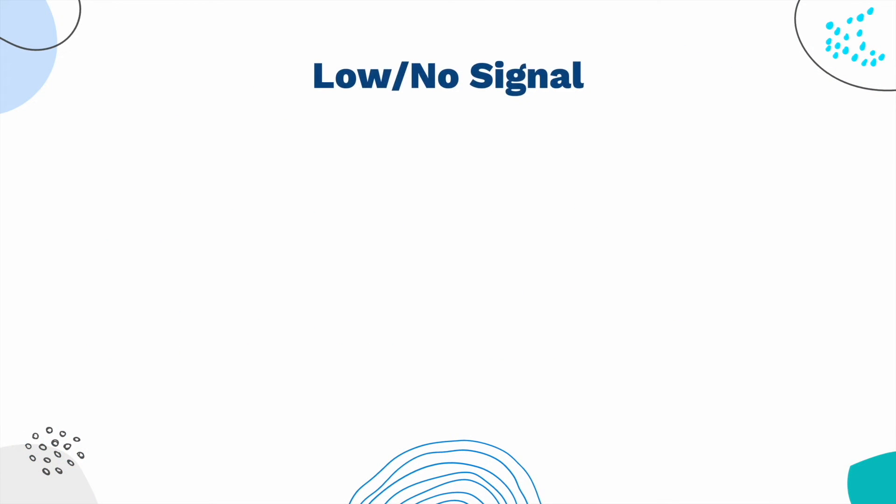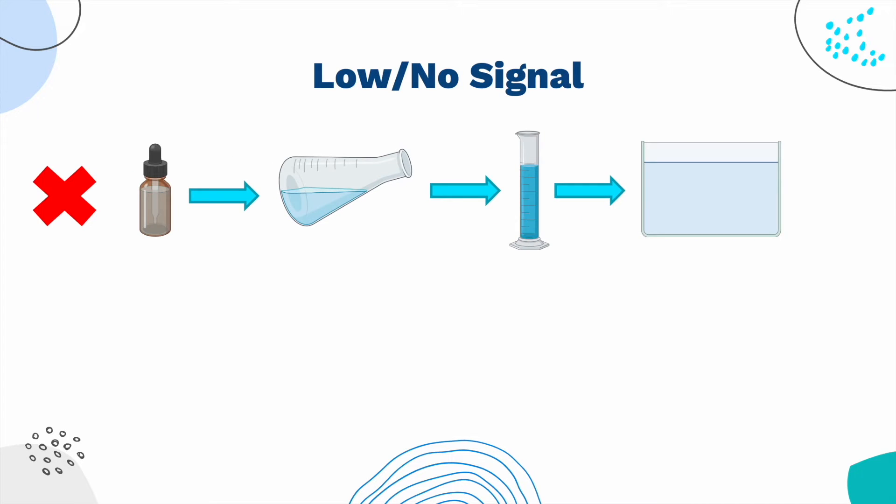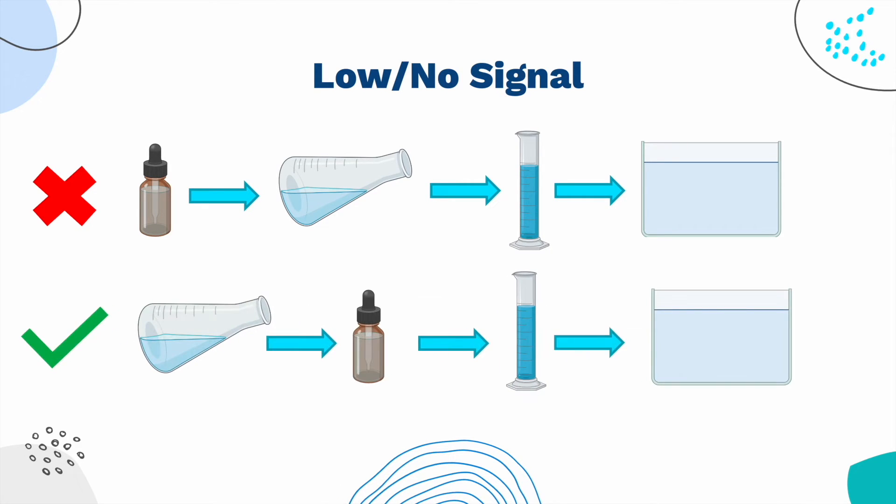If you see your ELISA has no or low signal, your reagents may have been added in an incorrect order or incorrectly prepared. Repeat the experiment and make sure to closely follow the provided protocol and solution preparation for whatever kit you may be using to conduct your ELISA.